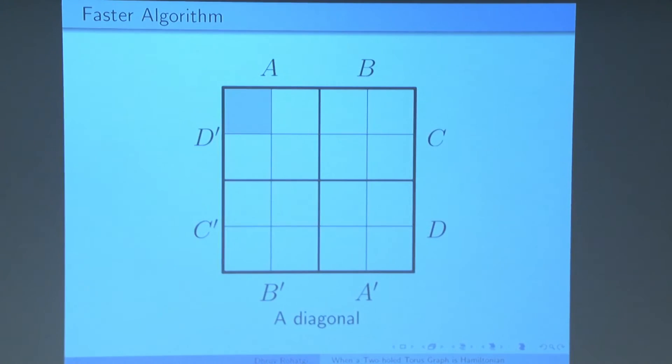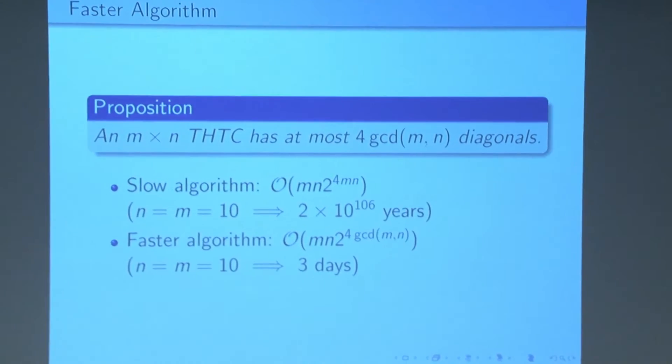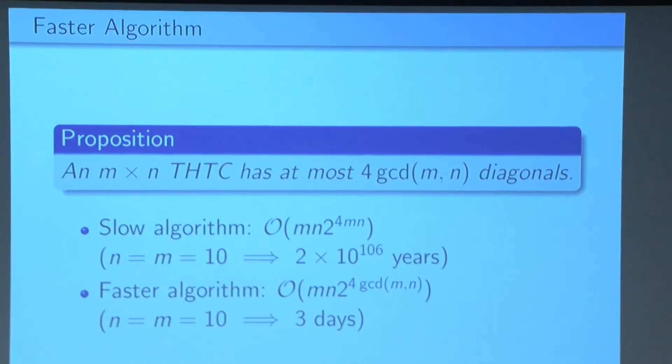And now we can divide our grid into diagonals. So a diagonal just consists of moving right and down, right and down, right and down diagonally, one diagonal. And every cell in this diagonal must have the same direction for it to possibly be a Hamiltonian cycle. This means instead of iterating over all the directions for all possible cells, all four NM cells, we only have to iterate over all the directions for all diagonals. And there are fewer of those. Only four times the greatest common divisor of NM diagonals in an N by N two-hole torus checkerboard. So this gives us an algorithm that for the 10 by 10 two-hole torus checkerboard, it will complete in three days. This is a lot better.